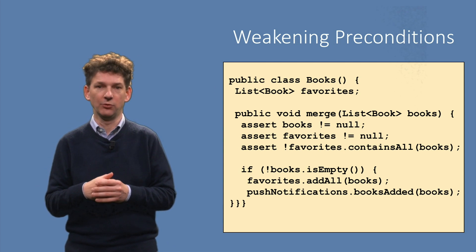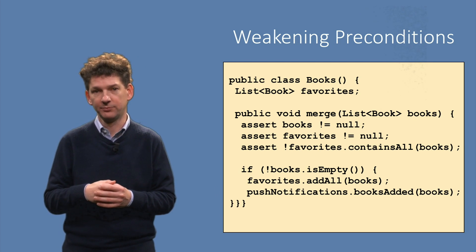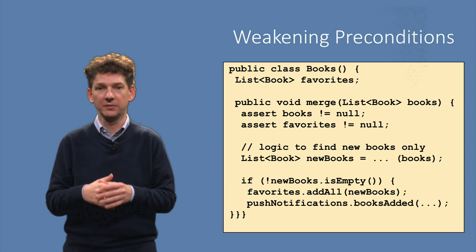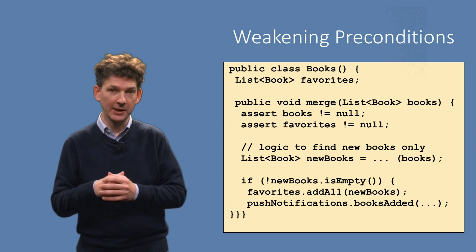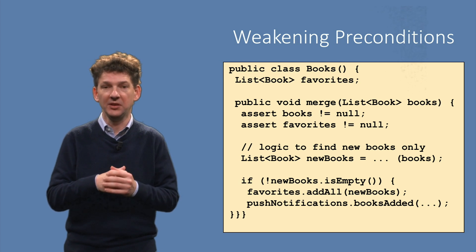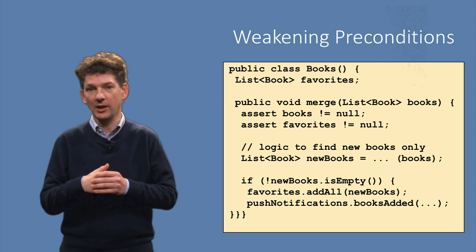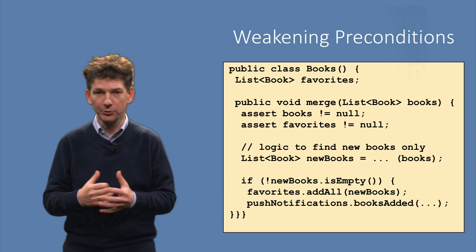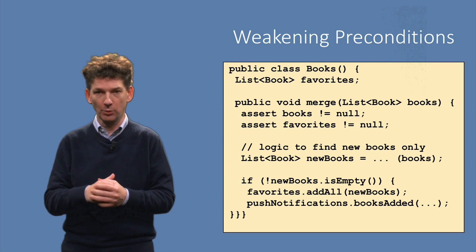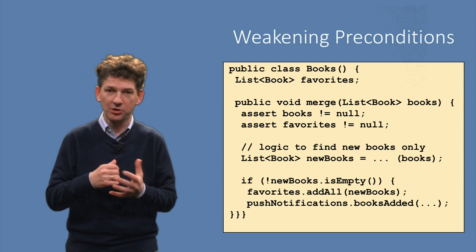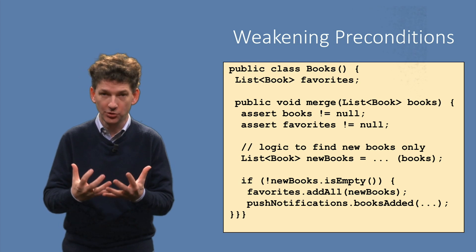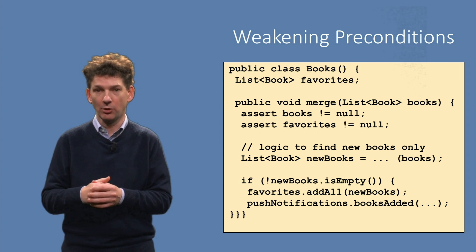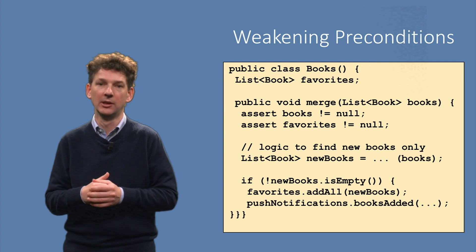We can do the same for the contains precondition. Again, we can modify the method body so that it only adds new books. This removes another precondition and makes the method easier to call. Again the price to pay is that the method itself needs to become more complicated. The method body now needs to filter out the new books. If there are indeed new books, it should then add those and send out the notifications. The removal of these two preconditions illustrates that the choice of preconditions is ultimately a design choice. You are designing your method or your full API and making choices about the precise circumstances under which methods can be invoked. These choices affect the callers of your method, who need to be aware of them. They also affect you as method implementer, since as you drop assumptions, you need to increase the complexity of your method to handle a wider variety of circumstances.